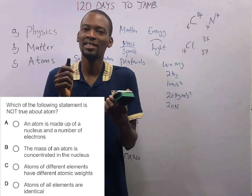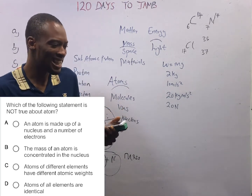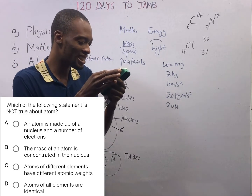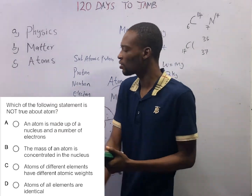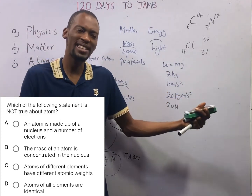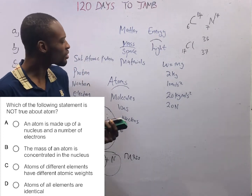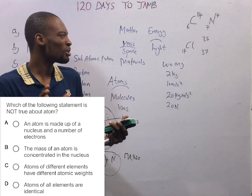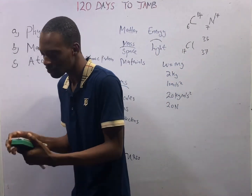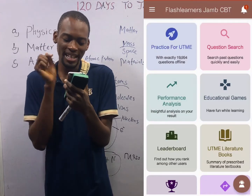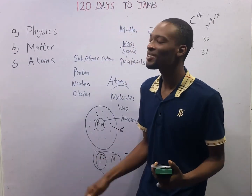Option D says atoms of all elements are identical — no. Atoms of all elements are not identical; atoms of the same elements are not even always identical. Atoms of different elements differ, and in some cases some are similar, but generally atoms differ. This makes option D not true about atoms. Any time you see 'all' in a question, you need to think twice, because generalization is almost always not true. Ladies and gentlemen, that is it for today's class. For homework, open your Flash Nenas app, click on question search, type 'atom,' then answer questions number 4 and 5, and see if you can answer any other questions. Thank you, see you in the next class.